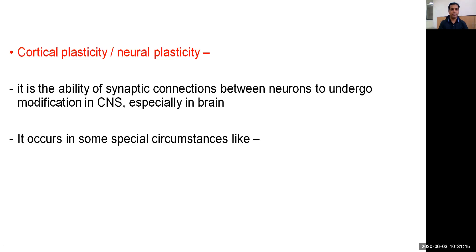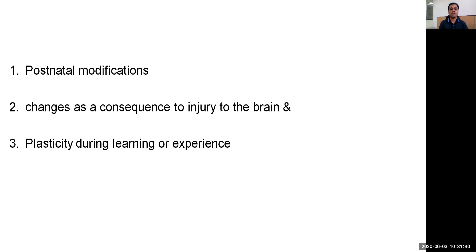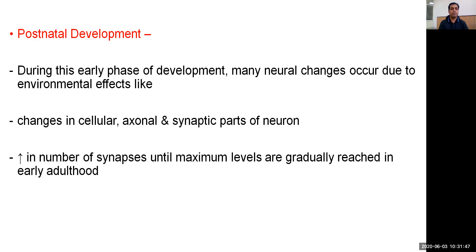Cortical plasticity or neural plasticity is the ability of synaptic connections between neurons to undergo modification in the central nervous system, especially when taking place in the brain. It occurs in some special circumstances: postnatal modification, changes as a consequence of injury to the brain, and plasticity during learning or exercise. During early postnatal development, many neural changes occur due to environmental effects such as changes in the cellular, axonal, and synaptic parts of neurons, with an increase in the number of synapses until maximum levels are gradually reached in early adulthood.